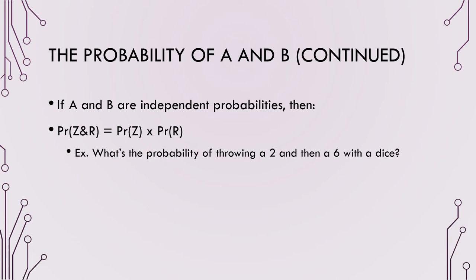When we use conjunctive claims — 'and' claims — the probability is lowered. If I ask what's the probability of throwing a two and then a six with a six-sided die, we multiply one-sixth by one-sixth to get one over 36. The probability of doing both things is less than either one on its own. So when you use disjunctive 'or' claims, you strengthen your probabilities; when you use conjunctive 'and' claims, you weaken your probabilities. This is important when writing and trying to make a case for why something is probable.